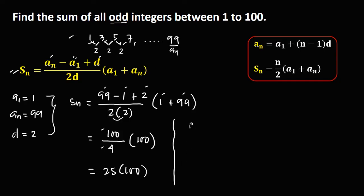Therefore, the total sum of all odd integers is 2,500.